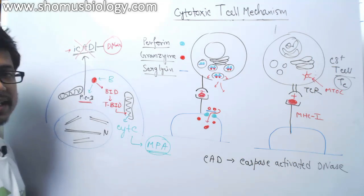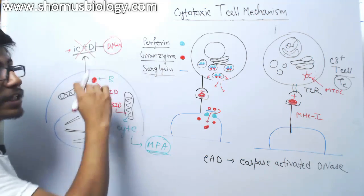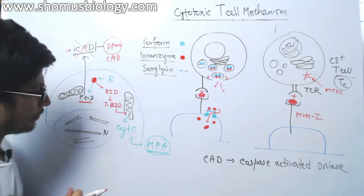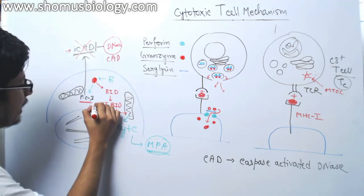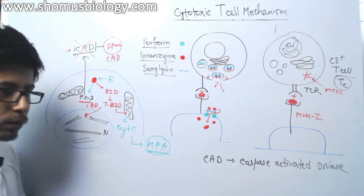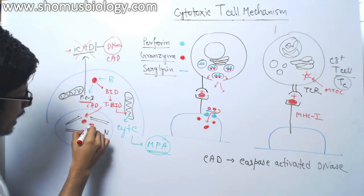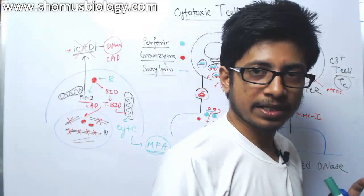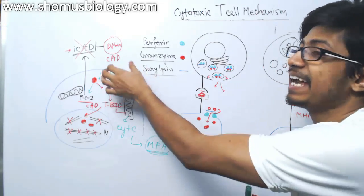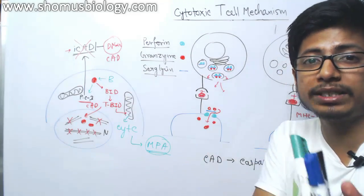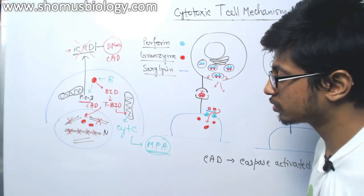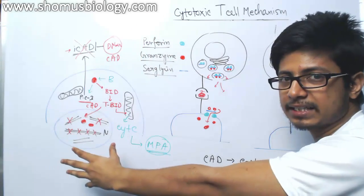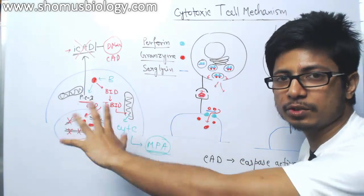But when this granzyme B activates procaspase 3, procaspase 3 degrades ICAD. As procaspase 3 degrades ICAD, DNase gets free which is known as CAD, caspase-activated DNase. Now, this caspase-activated DNase or CAD will take entry into the nucleus and they will start degrading DNA inside the nucleus. They will break down nucleic acid, that is why it is known as DNase. They can break down DNA. It is an endonuclease, so it will start breaking down DNA components. As the DNA is degraded inside the cell, there is no way the cell is going to survive.